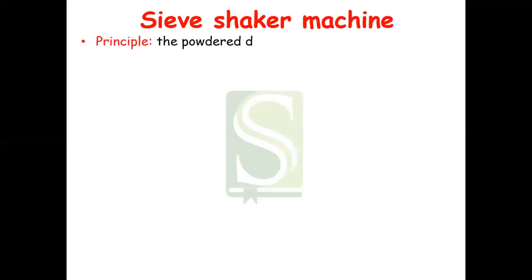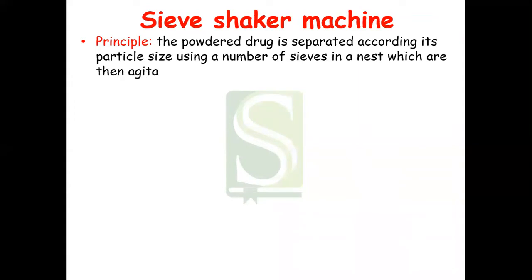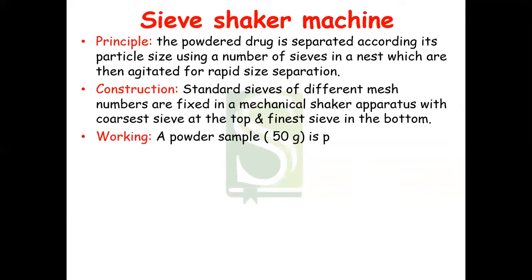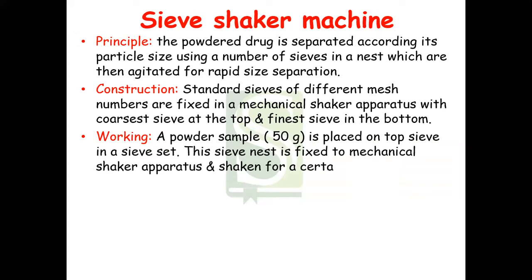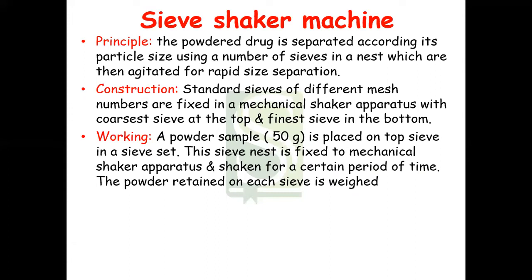The equipment used for the sieving method is the sieve shaker. This machine works on the principle that the powdered drug is separated according to its particle size using a number of sieves in a nest, which are then agitated for rapid size separation. The construction is simple — it has standard sieves of different mesh numbers fixed in a mechanical shaker apparatus with the coarsest sieve at the top and the finest sieve at the bottom. You place 50 grams of powder on the topmost coarsest sieve, fix the nest, and shake it for 10 to 15 minutes.